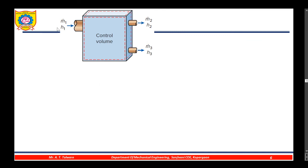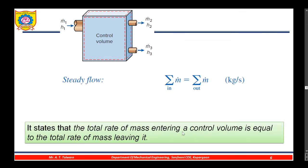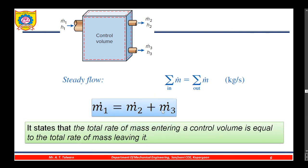For example, consider one inlet and two outlets. The rate of mass entering the control volume is m_dot_1, and the rate of mass leaving equals m_dot_2 plus m_dot_3. This is the mass balance for steady flow: m_dot_1 equals m_dot_2 plus m_dot_3, meaning the total rate of mass entering equals the total rate of mass leaving.